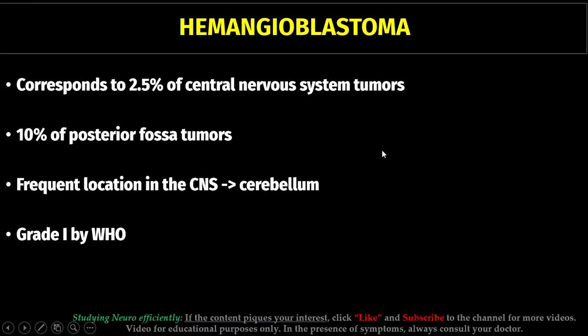Today we are going to talk about hemangioblastoma. Hemangioblastoma corresponds to 2.5% of central nervous system tumors. It is more common in the posterior fossa, corresponding to 10% of posterior fossa tumors. The main location in the CNS where hemangioblastoma occurs is the cerebellum.